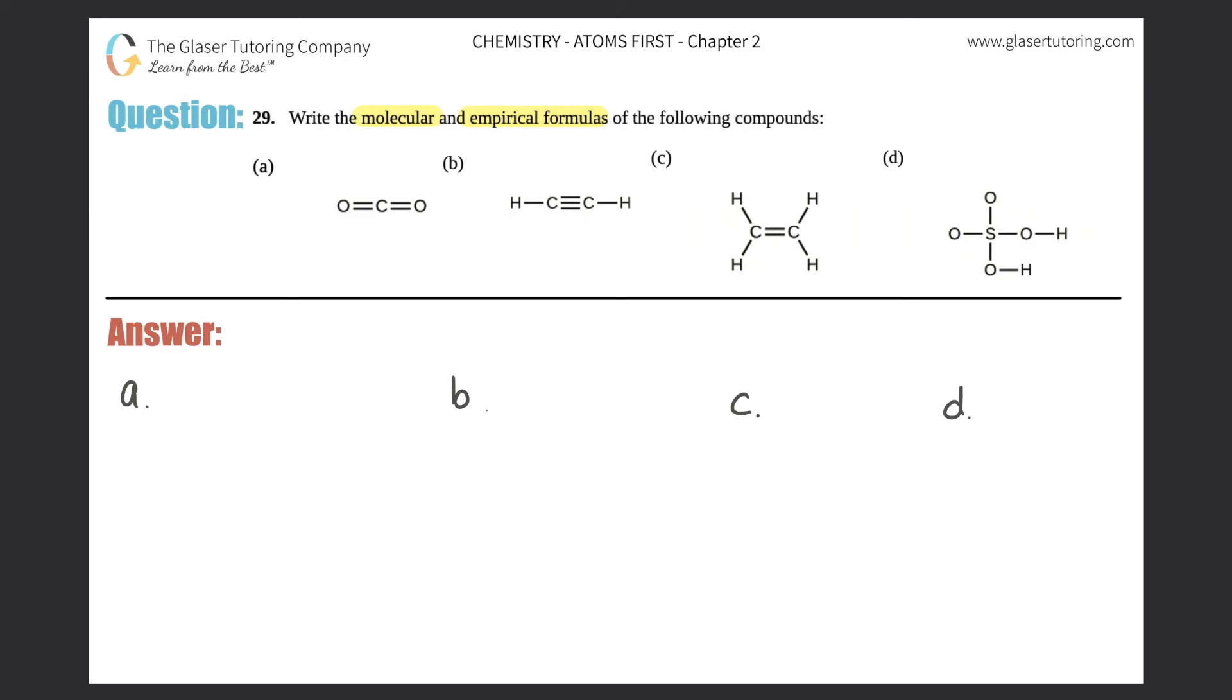Before we get started, we have to first know the difference between what a molecular formula is and an empirical formula. So I'm going to write MF over here for molecular formula, and then we'll compare it with the empirical formula. A molecular formula is the formula that you see. It's the formula that you see in compound. So it's going to be whatever compound they give you. Find out that formula. Do not touch it. That's always the molecular formula.